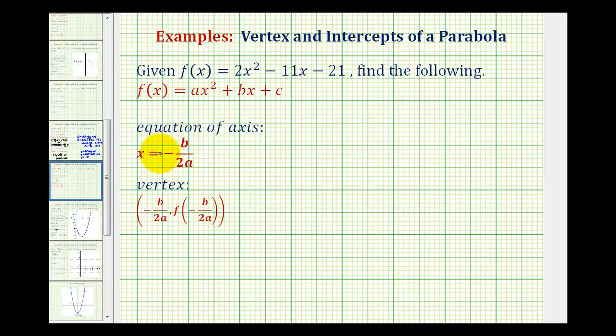Now we also want to find the equation of the axis, or axis of symmetry, and then the vertex. To do this, notice how we do want to identify the values of a and b, based upon the form of the quadratic function. We should recognize that a is the coefficient of the x squared term, so that's positive 2. b is the coefficient of the x term, so that's negative 11. And we don't need it in this problem, but c would be equal to negative 21.